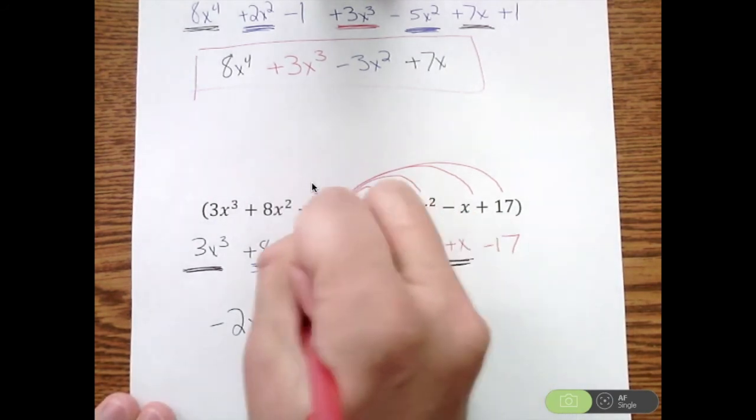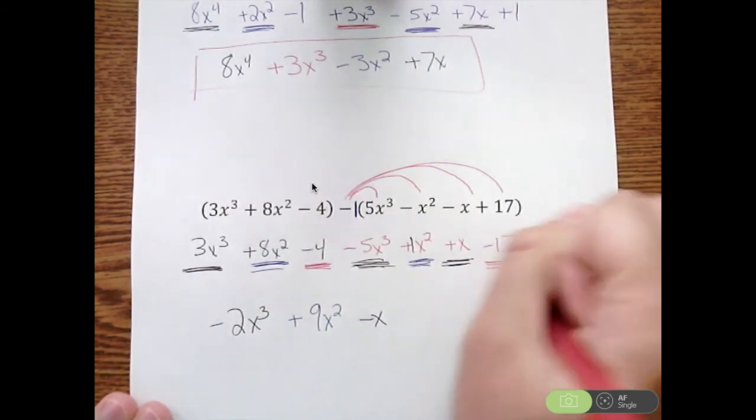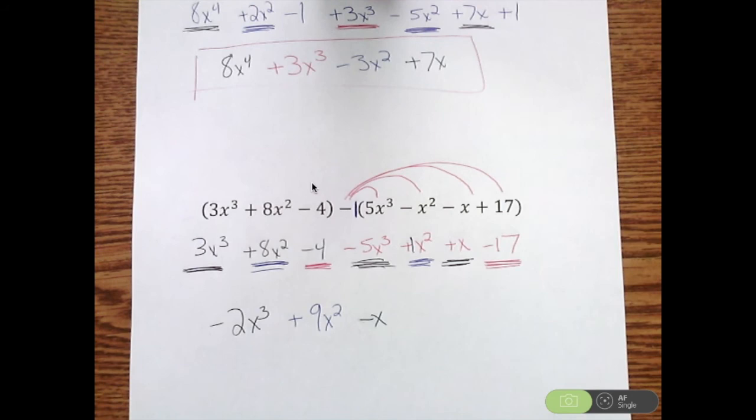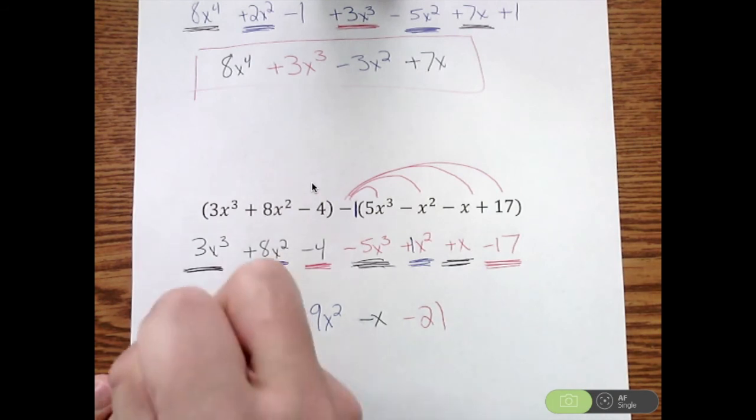And then I have minus 4, or a negative 4, minus 17. And that will give you negative 21. It is also in standard form, goes to the highest power of x all the way down to my lowest, which is the constant.